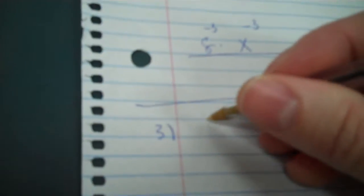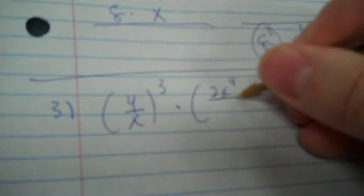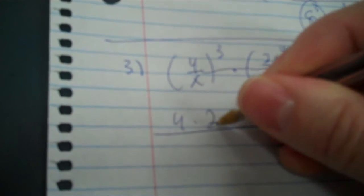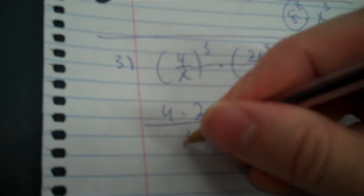Okay, number three. We have 4 over x to the third times 2x to the fourth over y to the second to the third. So, make that a line. So on top, you've got a factor of 4, a factor of 2, a factor of x, but you have factors on the bottom. You have x and y on the bottom.